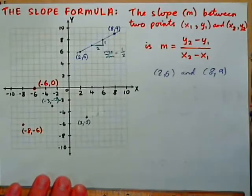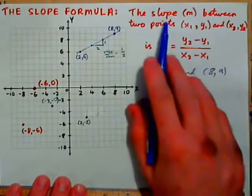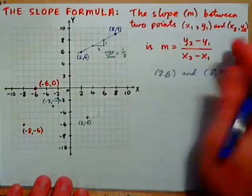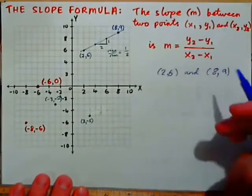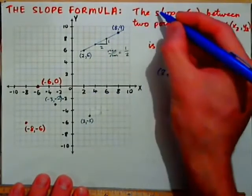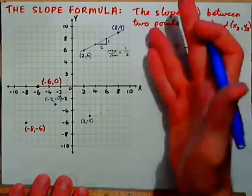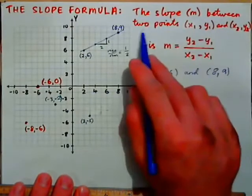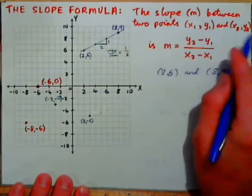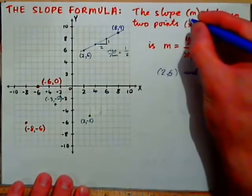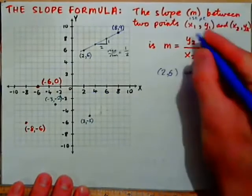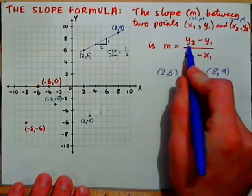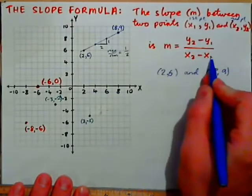There is a formula to calculate that. The slope M — M is the letter used in algebra to represent slope, because the letter S is already used for other things. So the slope M between two points (x1, y1) and (x2, y2) is: M equals y2 minus y1 over x2 minus x1.